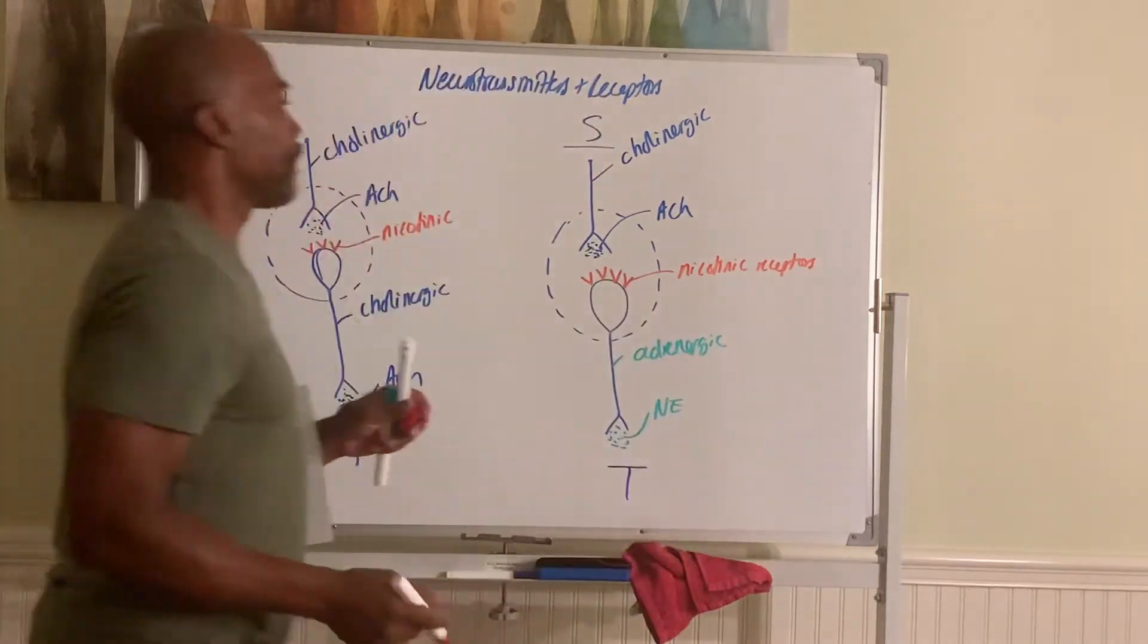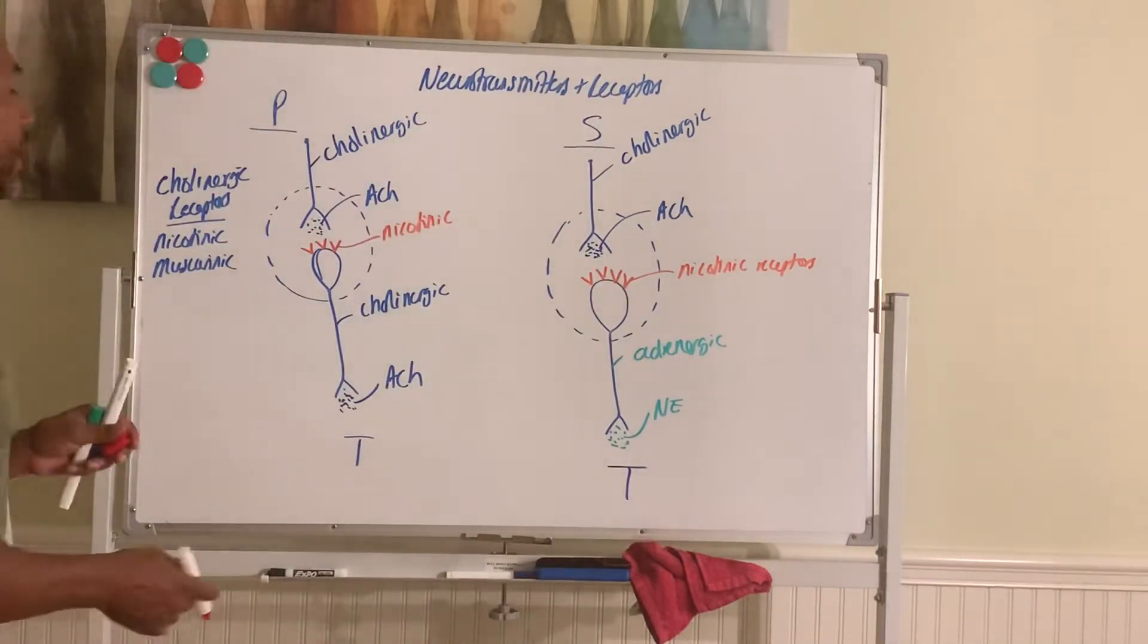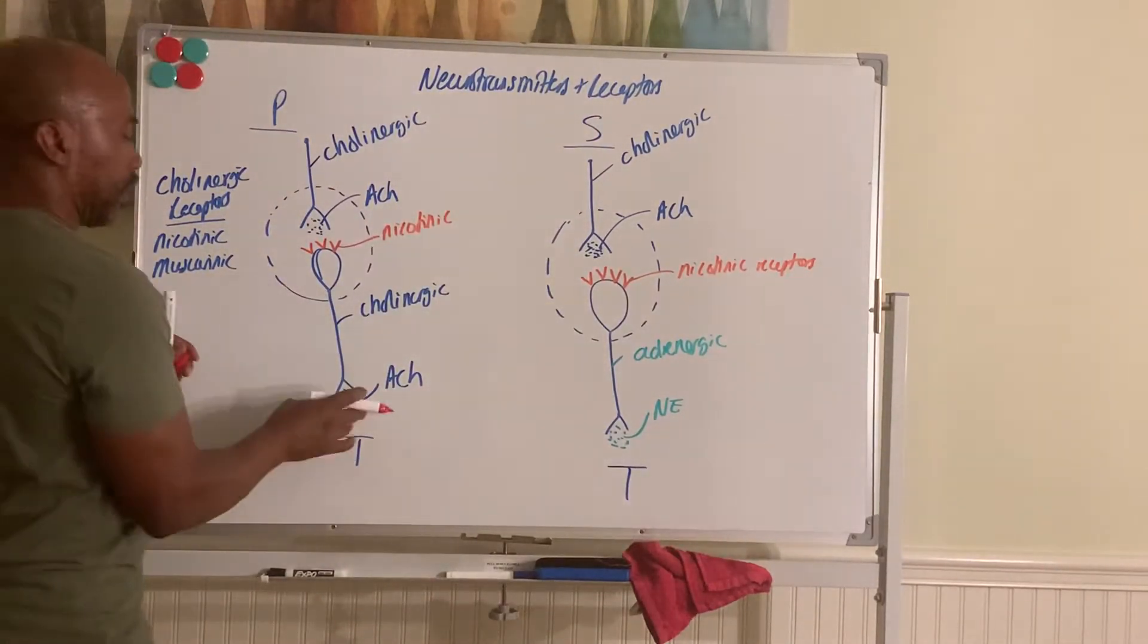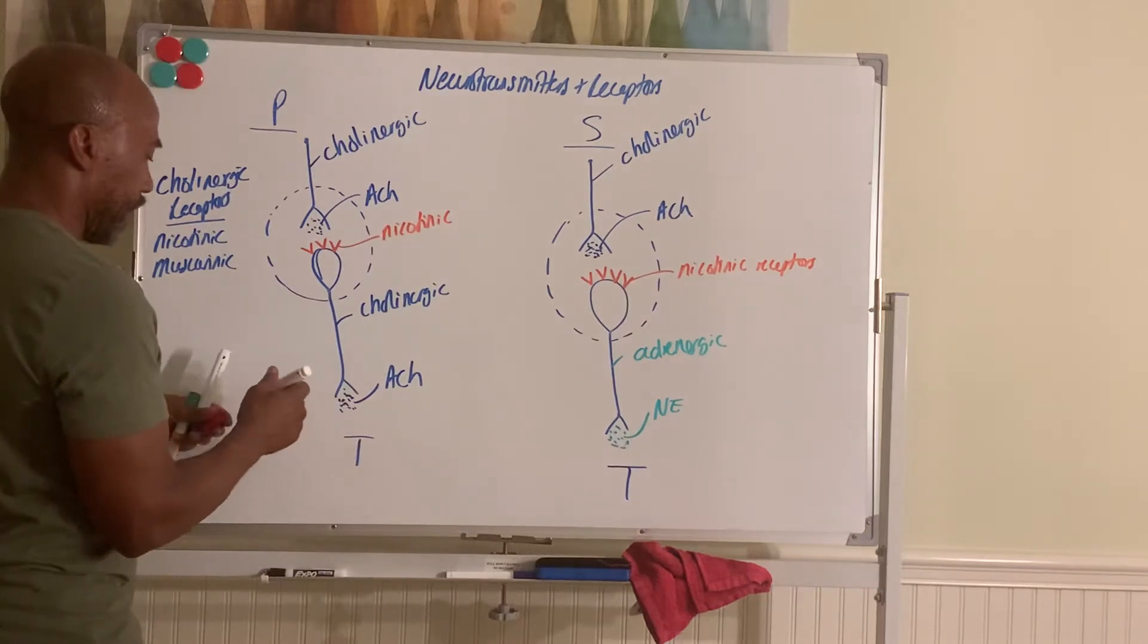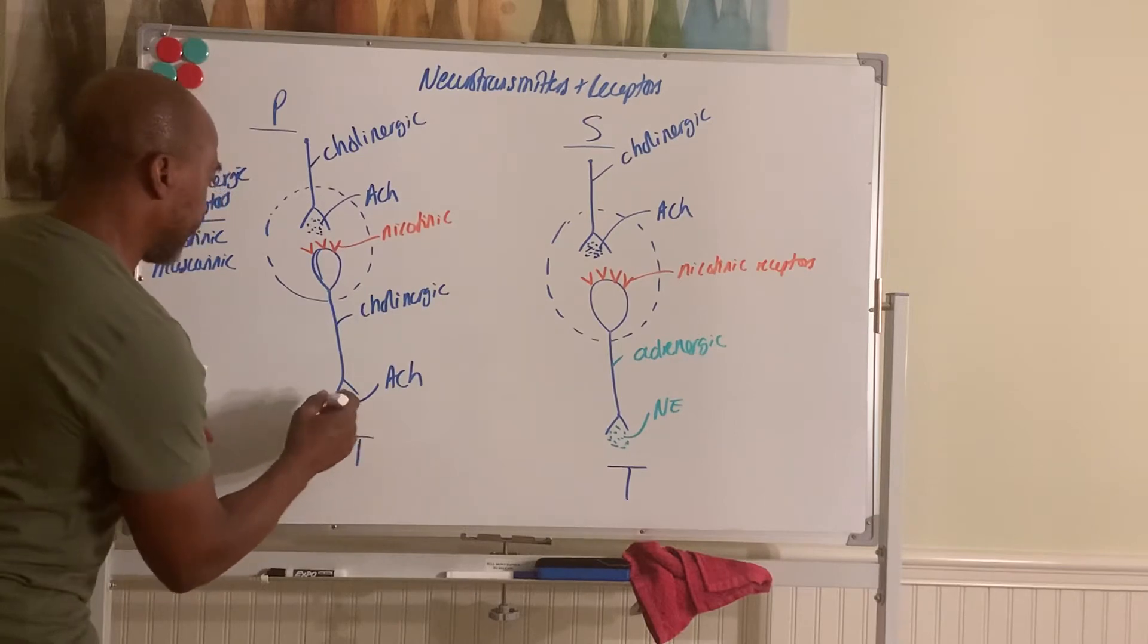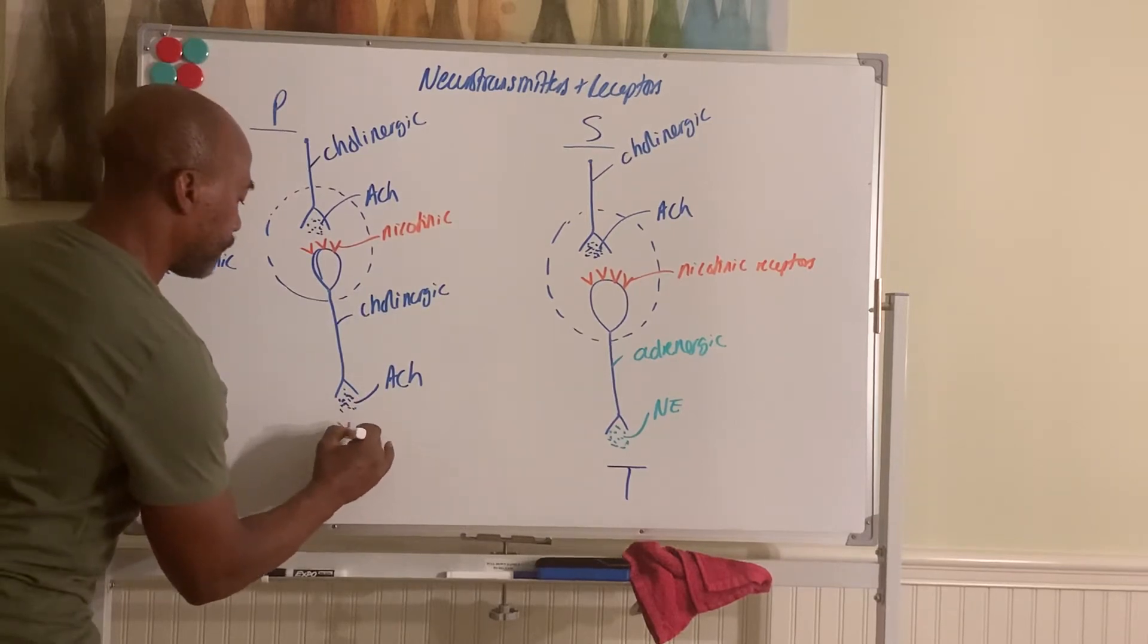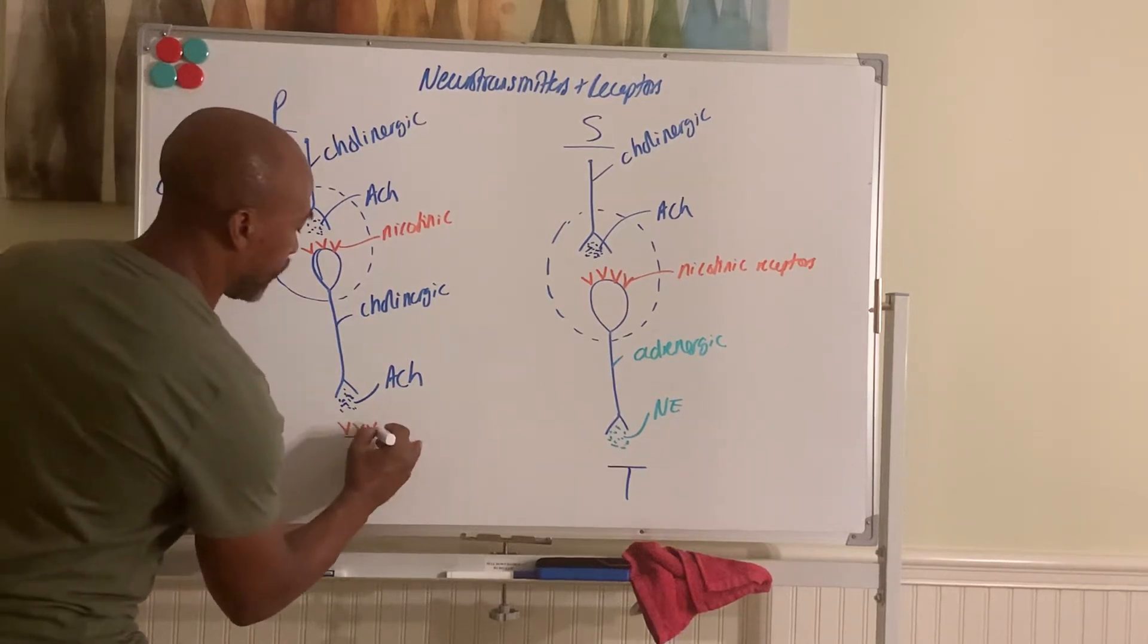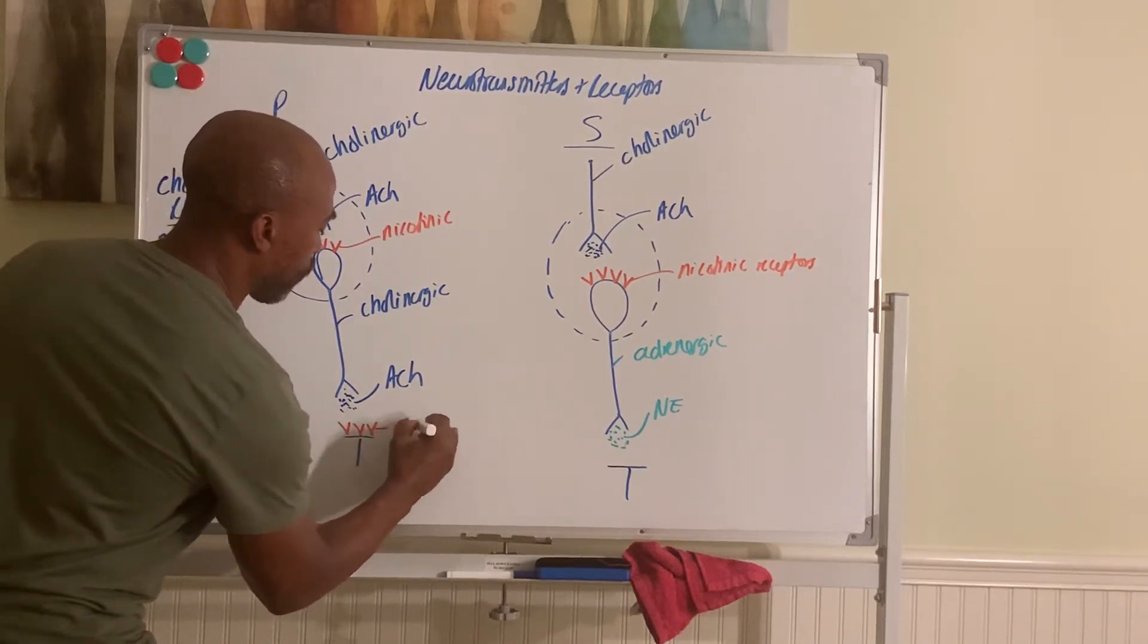And then the receptors at the target sites, the ones that respond to ACH down here, at the target, are different. These are muscarinic receptors.